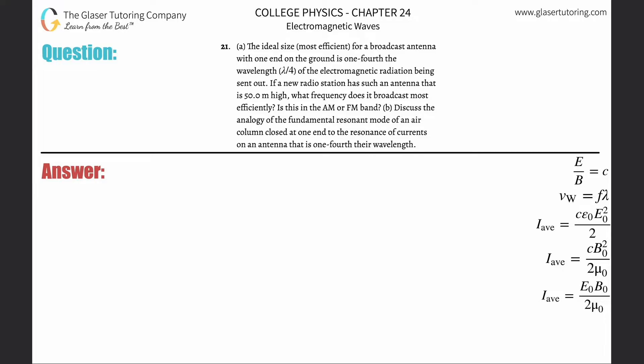Number 21: The ideal size most efficient for a broadcast antenna with one end on the ground is one-fourth the wavelength of the electromagnetic radiation being sent. If a new radio station has such an antenna that is 50 meters high, what frequency does it broadcast? Is it AM or FM?